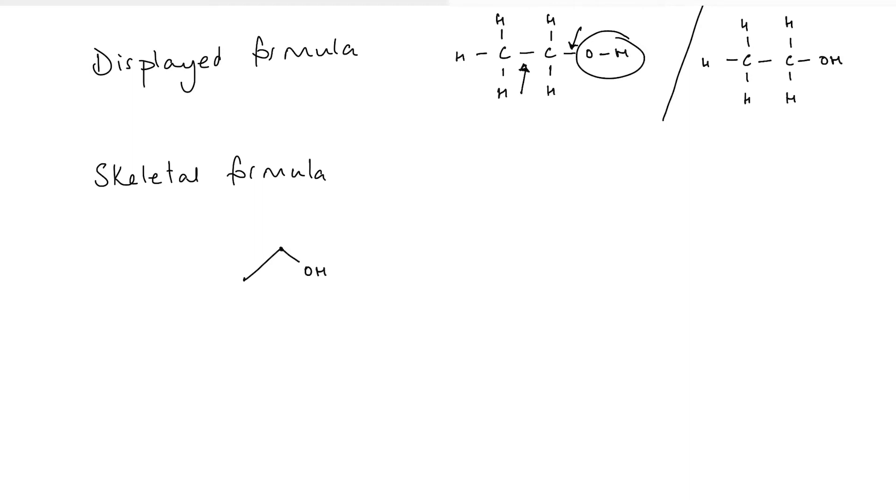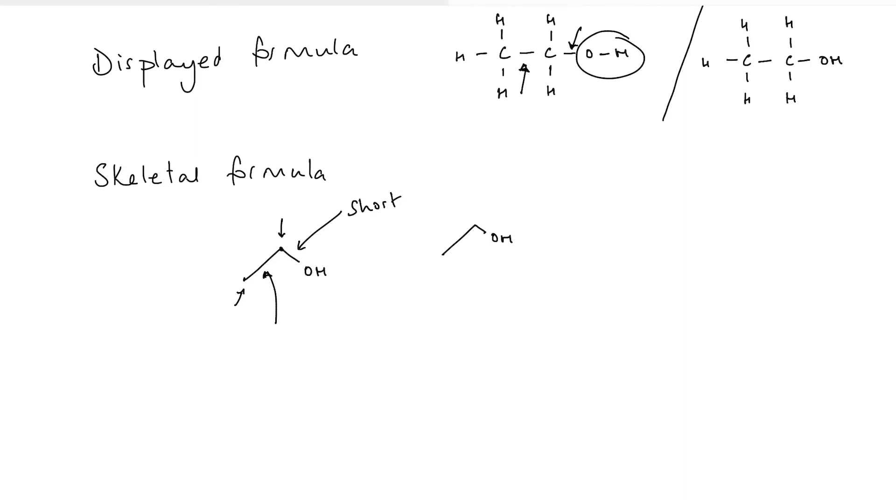When we're doing a skeletal formula, we would just show it as such. So this represents the first carbon atom. This is the second carbon atom. If there's nothing else shown, then we assume that there are hydrogens bonded to them. And these here are the bonds between the atoms. You'll notice that there is a shorter bond between the carbon and the functional group.